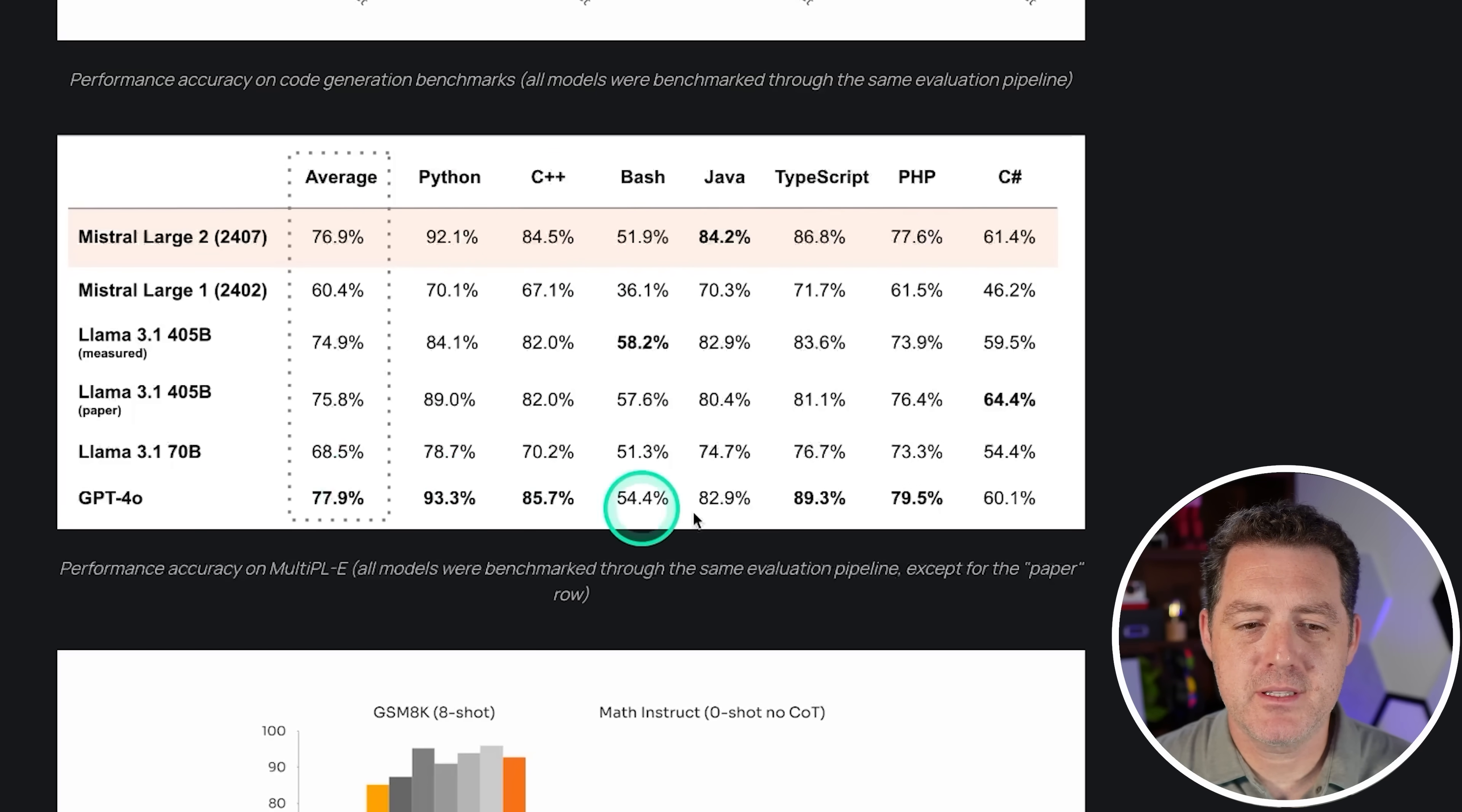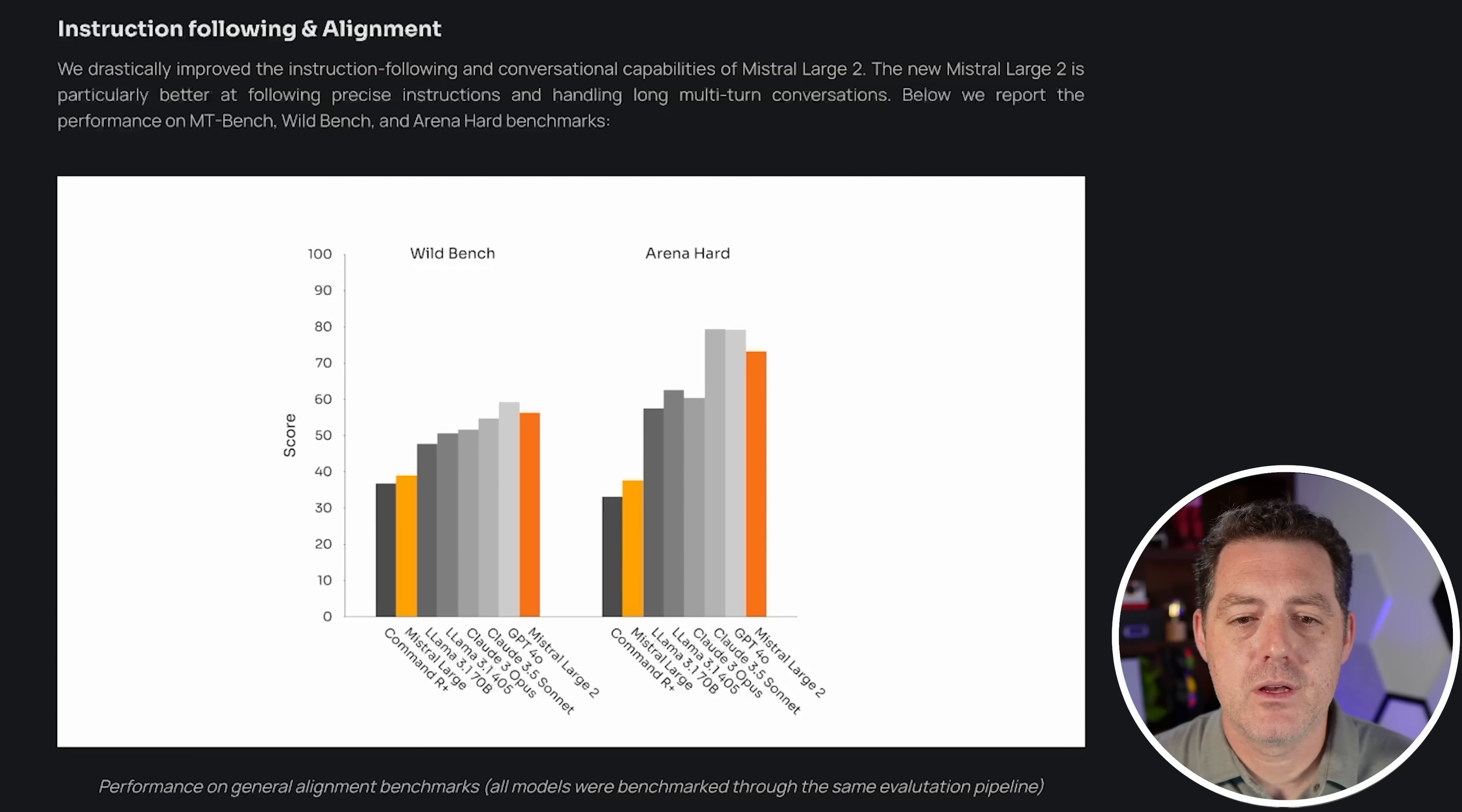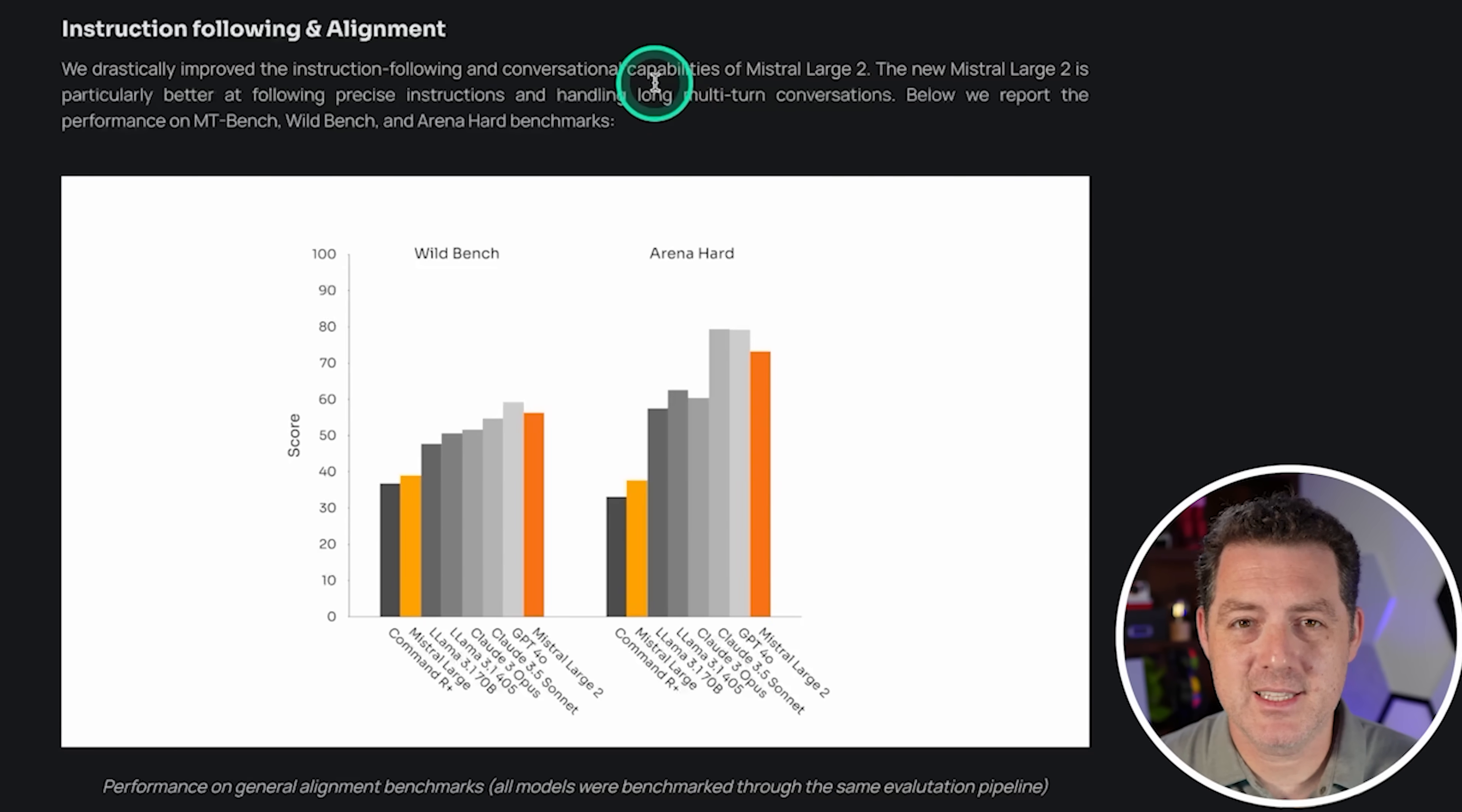Now, here's a coding benchmark with a bunch of different languages tested. And as we can see, GPT-4O still seems to be the best of these models with a 77.9 average score, and Mistral Large 2 coming in at 76.9, which is second best in this list and pretty much on par with 405B. Now, the one thing that they don't have here is Cloud 3.5 Sonnet, which I've been hearing is by far the best coding model. So the blog post has a bunch of other information. Let's get into the testing.